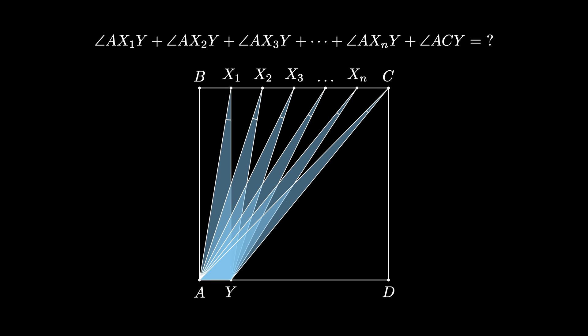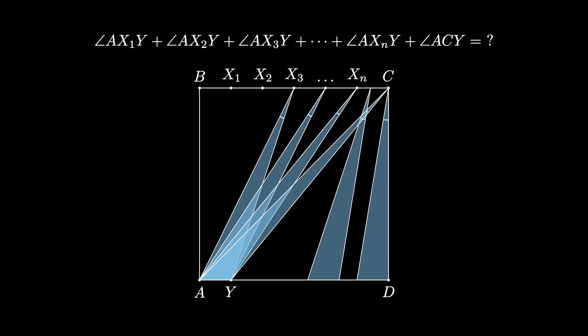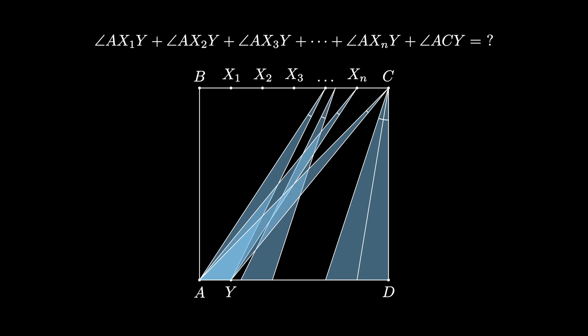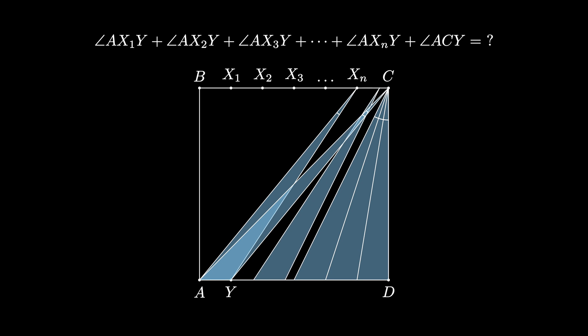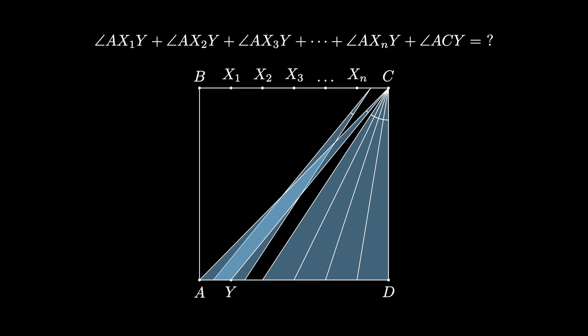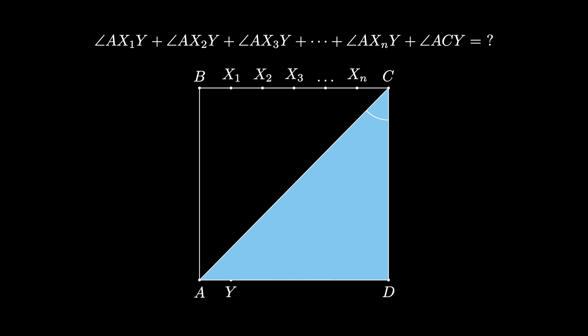To get the answer, we can systematically slide the triangles over like this. Because they all have a base length AY, and that length subdivides AD into the n+1 pieces, and because side lengths of successive triangles match by construction, we see that the n+1 triangles fill in exactly half of the square.